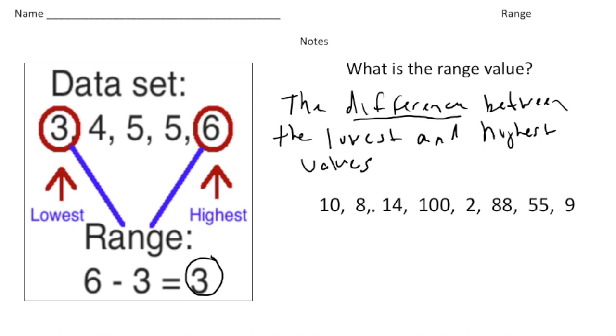So let's try this one over here. Here we have the numbers 10, 8, 14, 100, 2, 88, 55, and 9. All you have to do is identify the highest and the smallest number. It appears that our high is going to be 100 and our low is going to be 2.